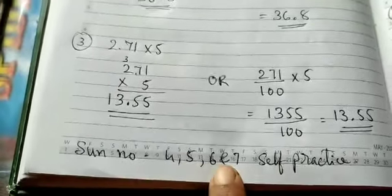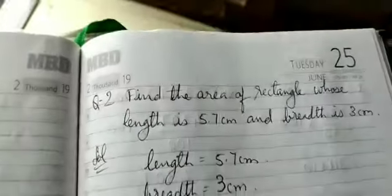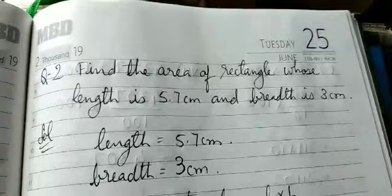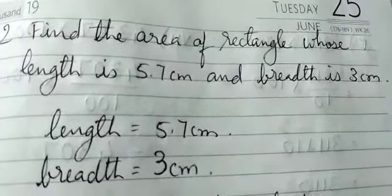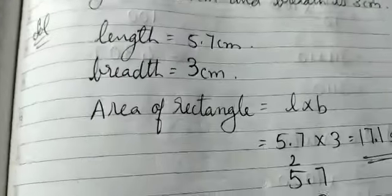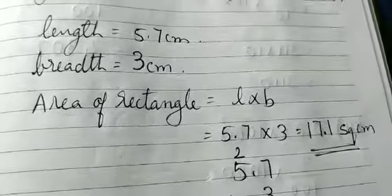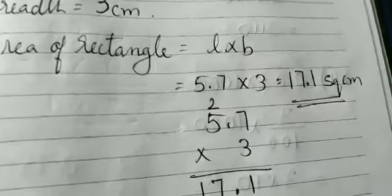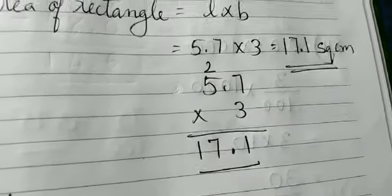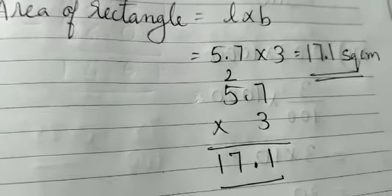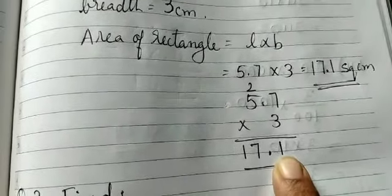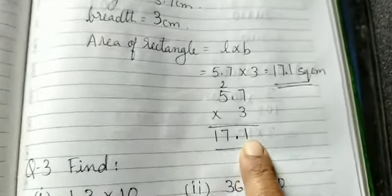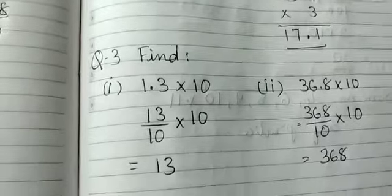Word problem: find the area of a rectangle whose length is 5.7 cm and breadth is 3 cm. Area = length × breadth = 5.7 × 3. Multiply 57 × 3 = 171, then count one decimal place from right: 17.1 square centimeter is the area of the given rectangle.